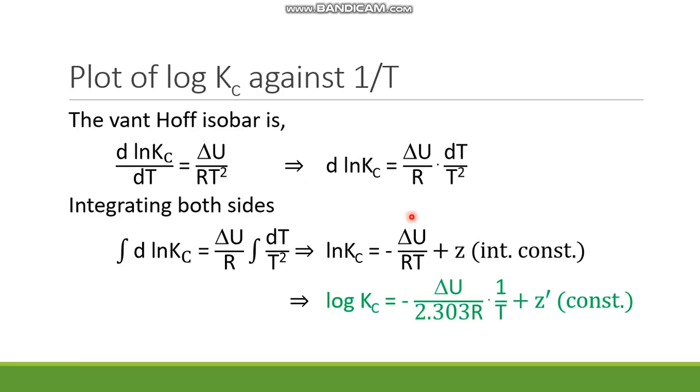Now, graphical plot. Plot of log Kc against 1 by T. Here, the same way we have to do the integration. The dT part taking to the right-hand side and separating the constant terms and the variable parts: delta U by R into dT by T squared. And here, in the left-hand side, d ln Kc.